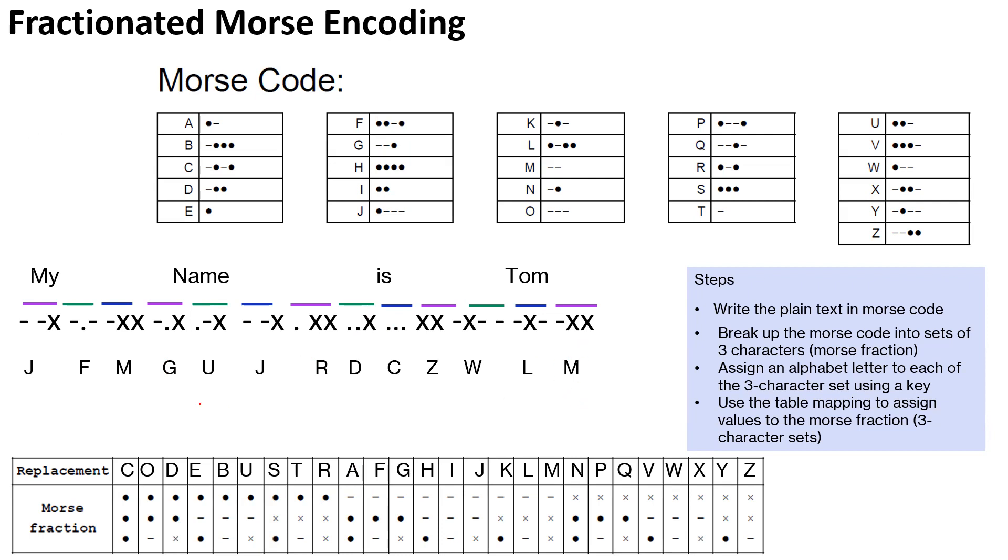Using the mapping table. And finally, this is what we get. So the fractionated Morse cipher for 'My name is Tom' using CODE BUSTER as the key is this phrase, this set of letters.